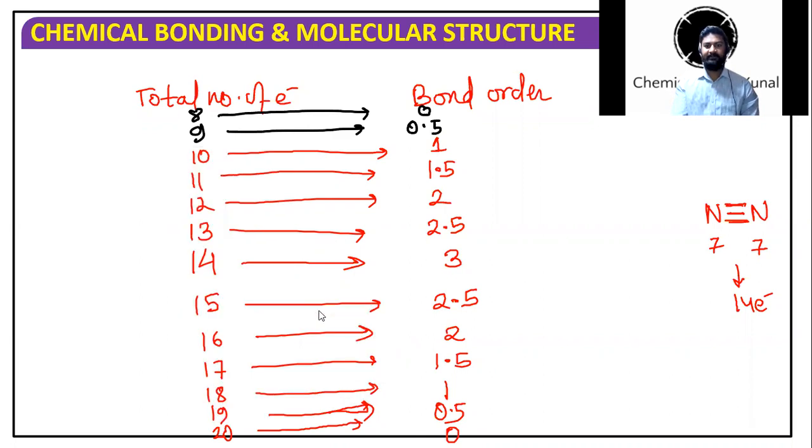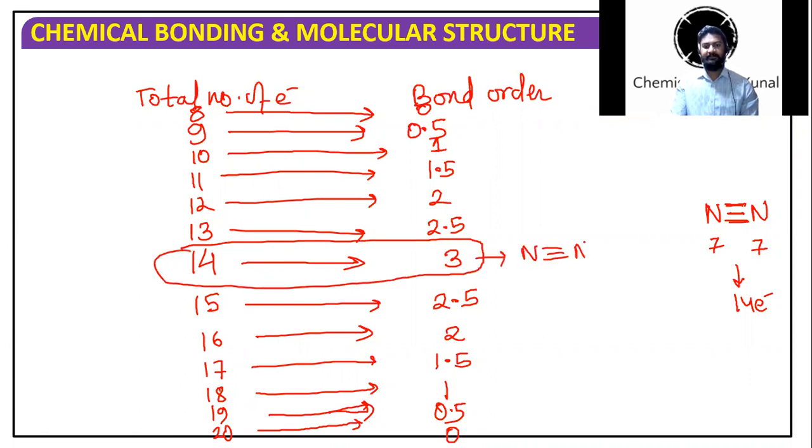Now it's time for us to do some questions on this. Just keep two things in mind, which will be checkpoints also. The two checkpoints for us are: 14 electrons gives bond order 3, which is nitrogen, and 16 electrons gives bond order 2, which is oxygen. So based on these, we can do any question very easily.